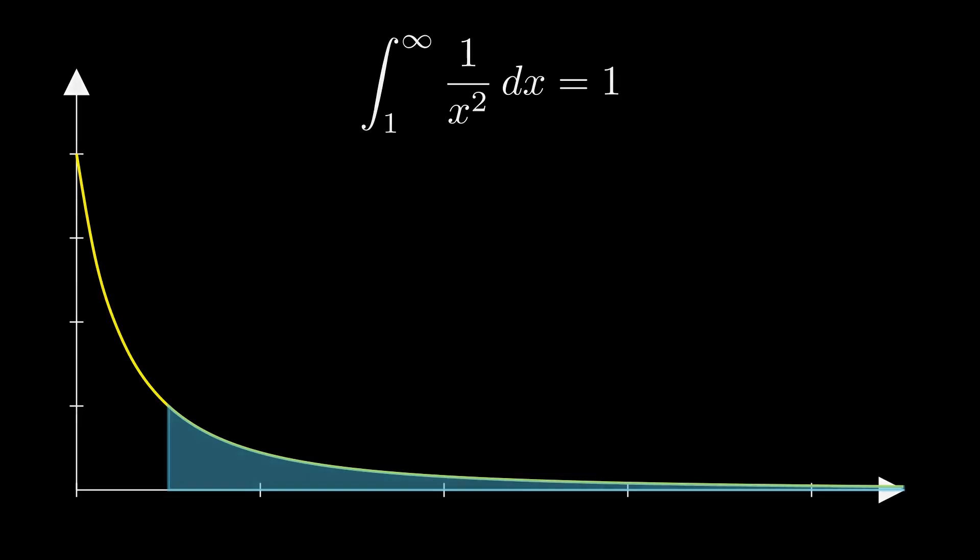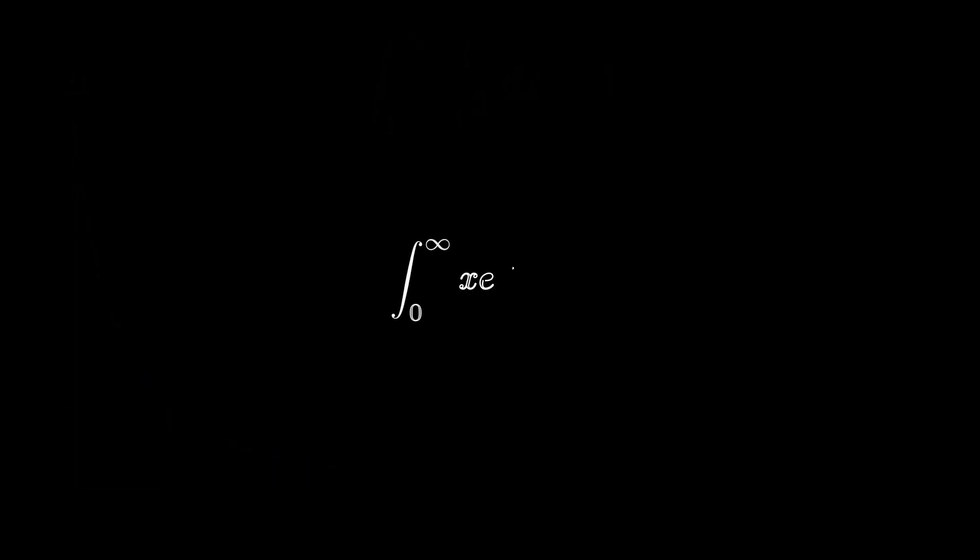Take another case where we have the integral from 0 to infinity of x e to the negative x squared dx. In this integral, we will do the same steps of doing this as a limit problem. So take that parameter t again.